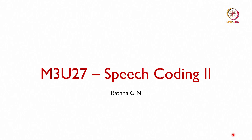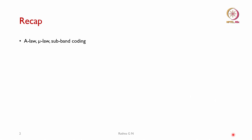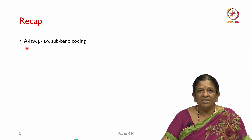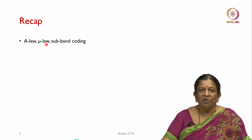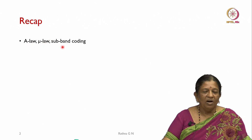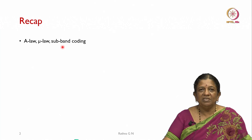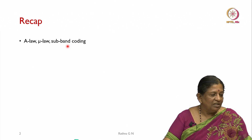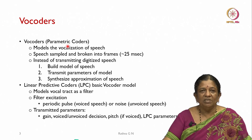Welcome back to the real-time digital signal processing course. Last class we discussed a little on speech coding; today we will continue on that regarding the vocoders — this is the second lecture on that topic. We discussed mu-law and subband coding, how we can bring down from PCM at 64 kilobits per second to subband coding at 31.5 kilobits per second. Today we will see about the vocoders.